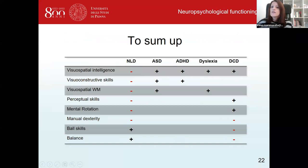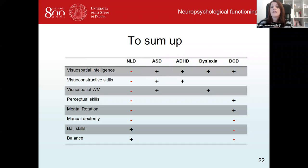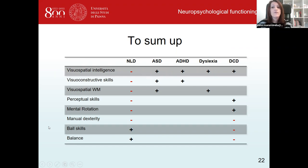To summarize this section, there is growing evidence that the neuropsychological profile of children with NLD is distinct from other neurodevelopmental disorders. Specifically, children with NLD show poor visuospatial intelligence and struggle in visuospatial tasks where motor skills are not required — including visuospatial working memory, perceptual tasks, and mental rotation. They also have poor manual dexterity and visuoconstructive skills requiring fine motor abilities, but their gross motor abilities appear adequate.